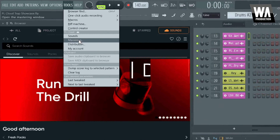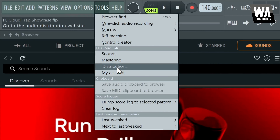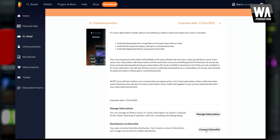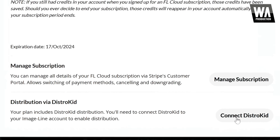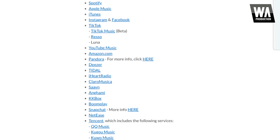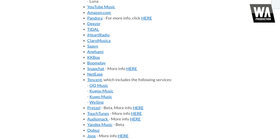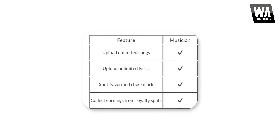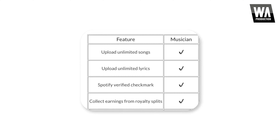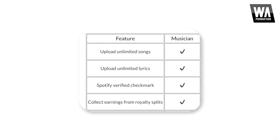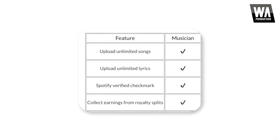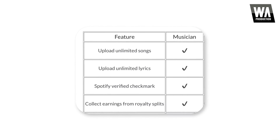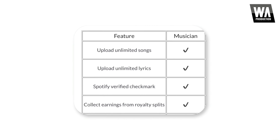Located within FL Studio's tools menu, the distribution feature offers an uncomplicated method for unlimited music uploads to the most popular platforms such as Spotify and Apple Music, but also to many others, as shown here. The FL Cloud subscription offers the benefits of the DistroKid Musician Plan, permitting unlimited song and lyric uploads, a Spotify verified checkmark for your artist profile, and full collection of royalties from Splits.